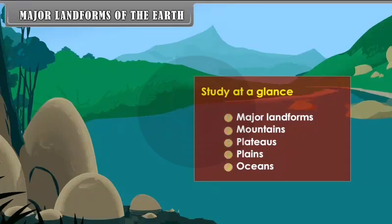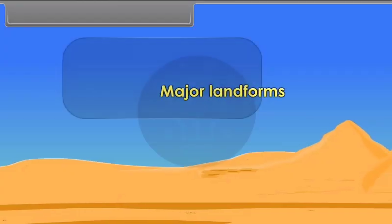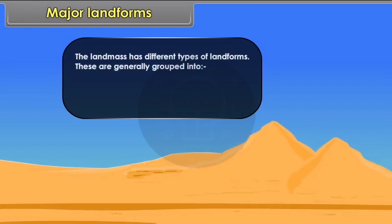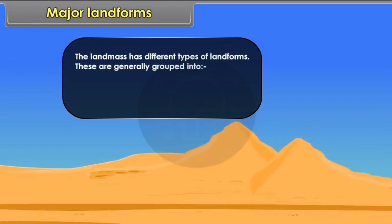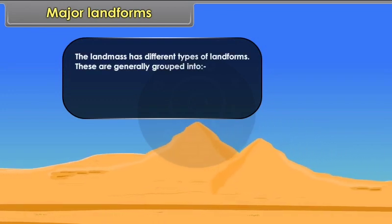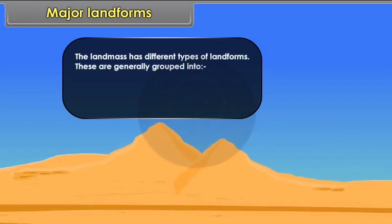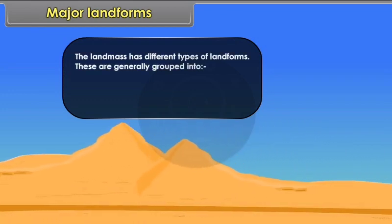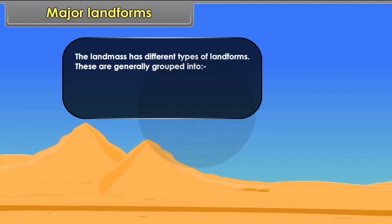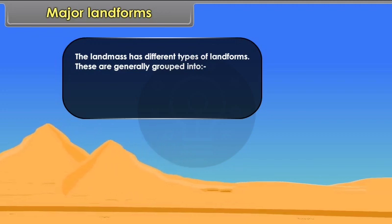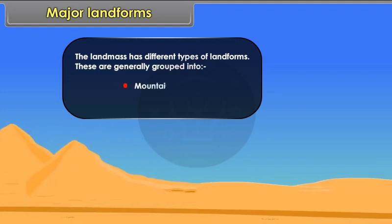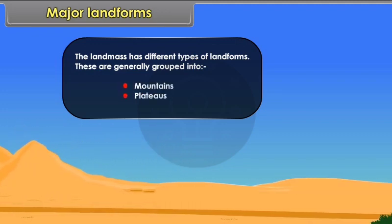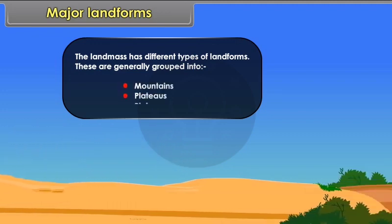Major Landforms. The landmass has different types of landforms. These are generally grouped into Mountains, Plateaus, and Plains.